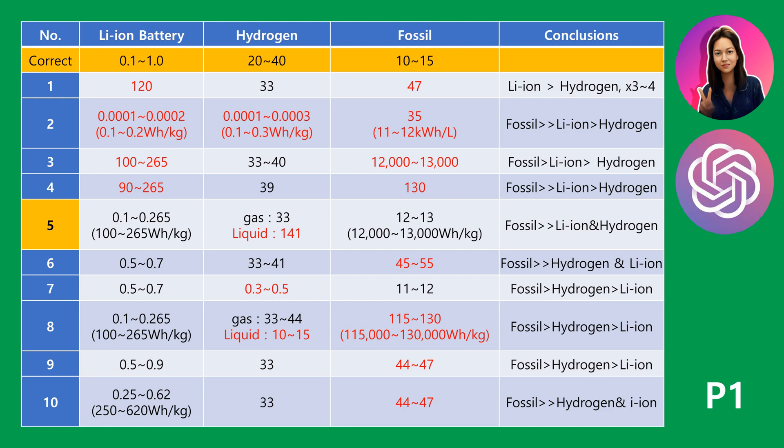I applied kilowatt hours per kilogram as the basic unit of energy density per weight in the table. When other units were used, the units were unified and specified in parentheses. Black values are within the defined correct answer range and red values are outside the correct range. Most of the answers are out of the range of correct answers. This table compares the first to tenth answers — except for the fifth answer, all nine answers have incorrect values.